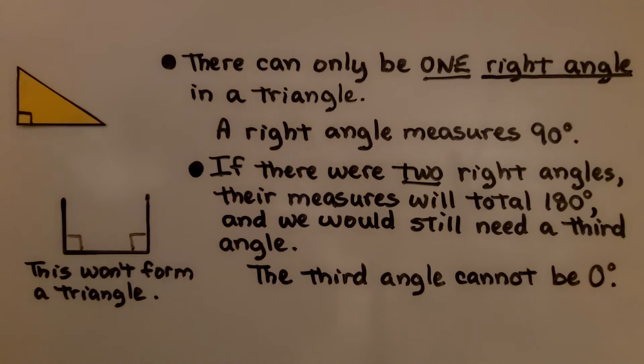There can only be one right angle in a triangle. A right angle measures 90 degrees. If there were two right angles, their measures would total 180 degrees, and we would still need a third angle. The third angle cannot be zero degrees. This won't form a triangle.